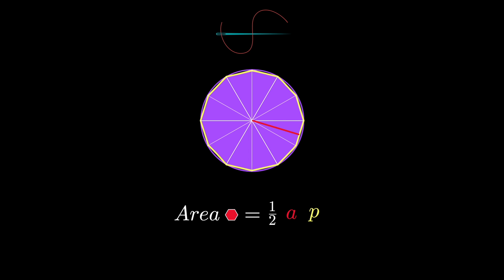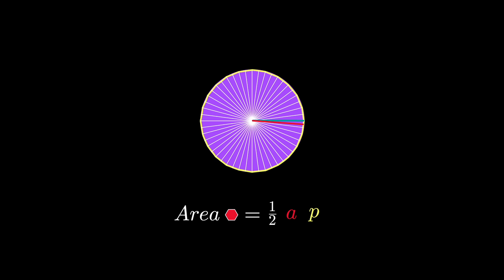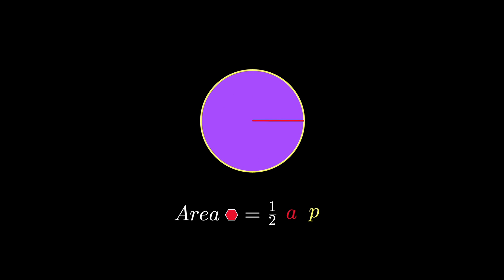Now when we double the number of the sides of the polygon, we notice that its apothem gets closer to the radius of the circle, and its perimeter gets closer to the circumference. And when we keep doubling, they keep getting closer and closer. This suggests that at infinity, the apothem would line up with the radius of the circle, and the perimeter would line up with the circumference.